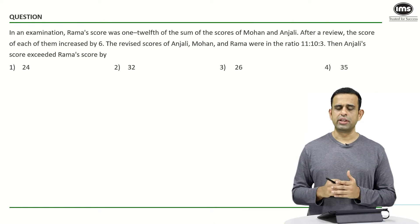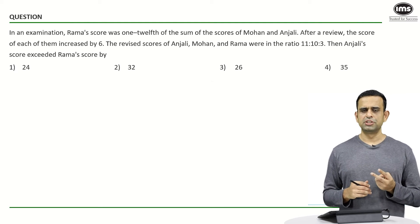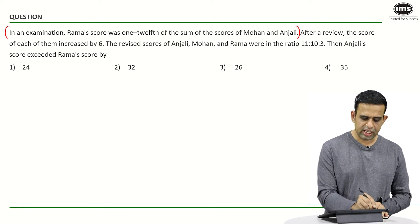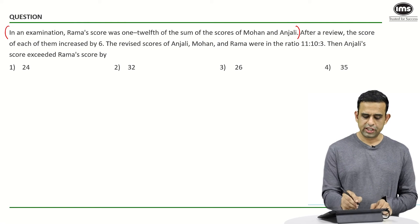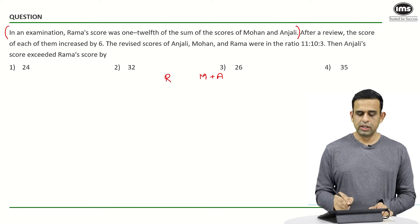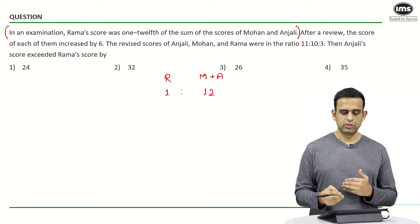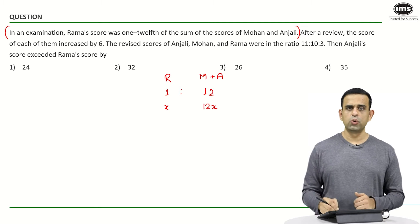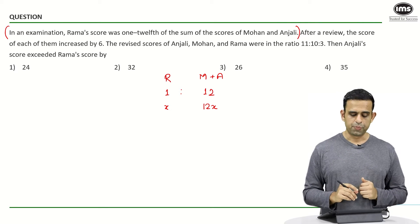The question goes like this: in an examination, Rama's score was 1/12th of the score of Mohan and Anjali put together. I will show you three methods. The first one will be top to bottom — starting from the first sentence. From the first sentence, the score of Rama compared to Mohan and Anjali together is in the ratio of 1 is to 12. So if I assume a variable, Rama's score is x and Mohan plus Anjali's total becomes 12x.